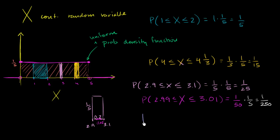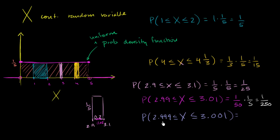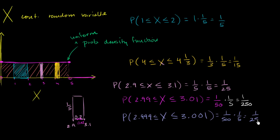I think you see why this is getting interesting. What's the probability that 2.999 is less than or equal to our random variable, which is less than or equal to 3.001? The base — this little range — is now 0.002, or 1/500. So it's 1/500 times the height 1/5, which gives us 1/2500. We're getting closer and closer to x being exactly 3, and our probability is getting lower and lower.